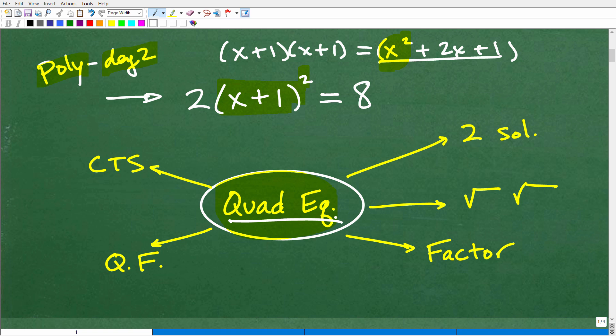All right, so what do we know about quadratic equations? Well, the first thing you need to understand is that all quadratic equations will always have two solutions. Now, sometimes there'll be two real number solutions, or you can have imaginary complex number solutions as well. But there'll always be two. So that's the first thing.